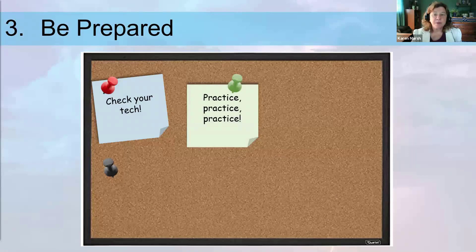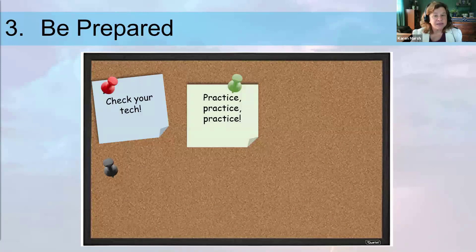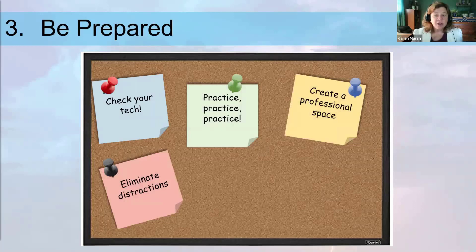Third, be prepared. Know the content and be sure your technology works the way that you expect it to work. Practice your delivery and do a dry run, preferably with a few trusted advisors who can help you by providing feedback. Practice until you feel confident with your delivery and with the technology. Accept that technical glitches can and will occur, but do everything possible to mitigate them in advance.